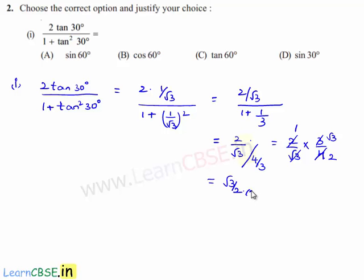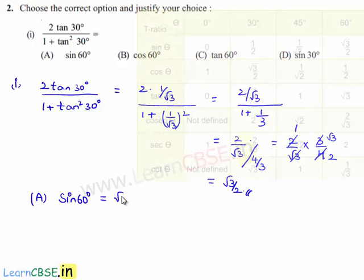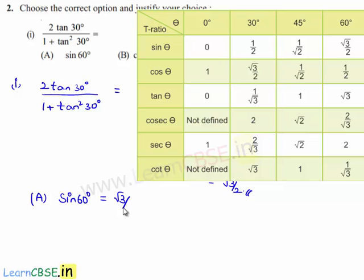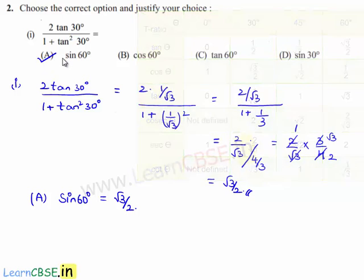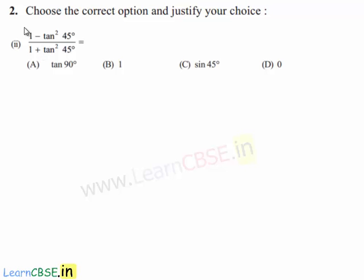Let us verify from the options where we get the value root 3 by 2. Option A gives sin 60. We know the value of sin 60 is root 3 by 2. Therefore, option A is the correct one. Moving on to the second question, second bit.